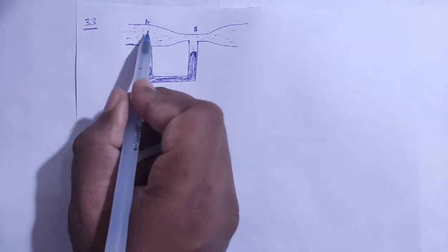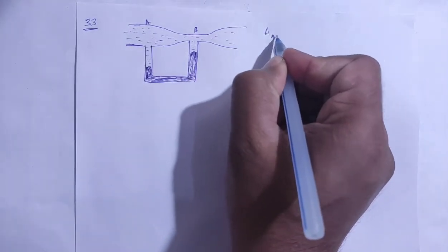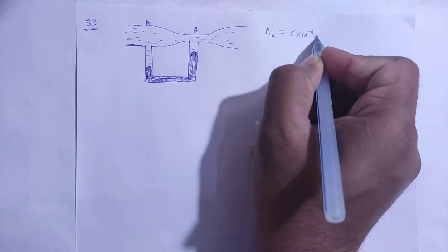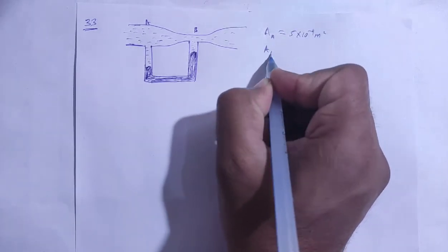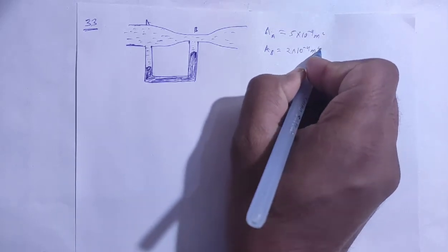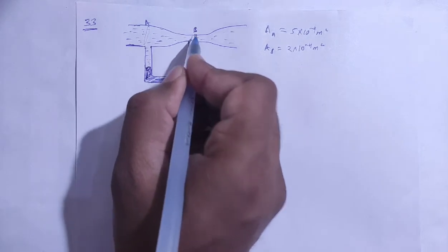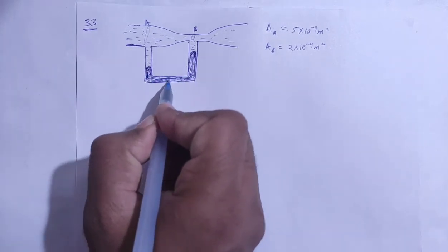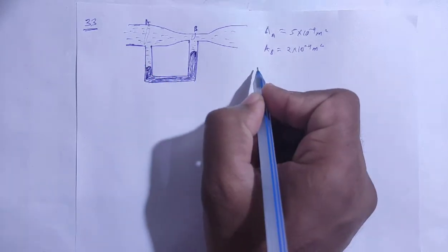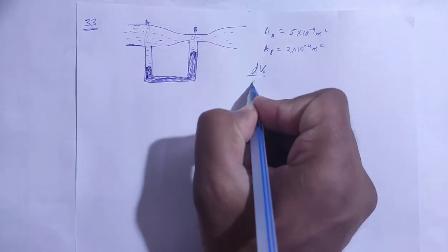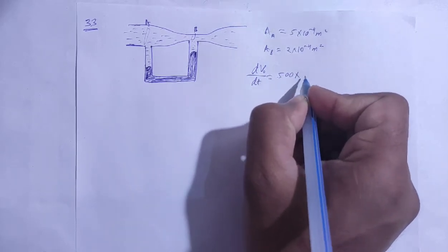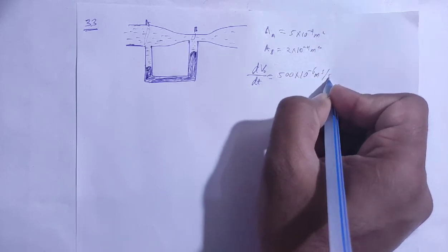This is a tube with area of cross section A given as 5 cm², and area of cross section B given as 2 cm², which is 2×10⁻⁴ m². These areas of cross section are labeled A and B. The rate of flow of water, dV/dt, is given as 500 cm³ per second, or 500×10⁻⁶ m³ per second.